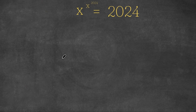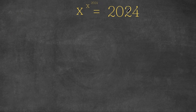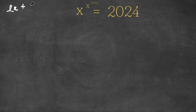Hey guys, welcome back to Clicking Academics. In today's video I'm going to be teaching you guys how to solve this exponential problem. So we have x to the power of x to the power of 2024 is equal to 2024. What I'm first going to do is let x to the power of 2024 equal to the variable a.